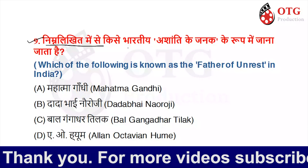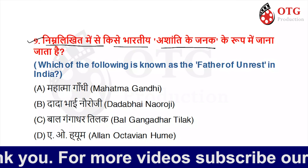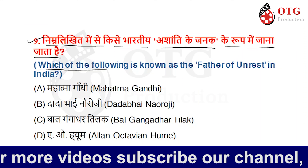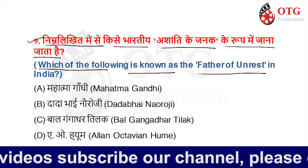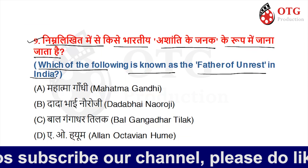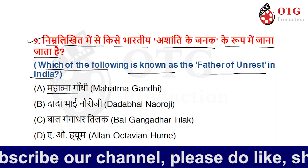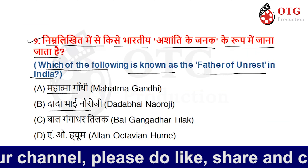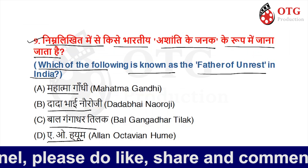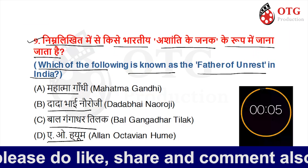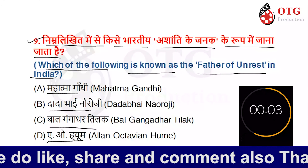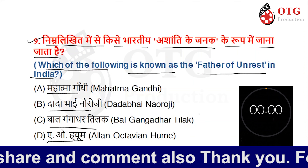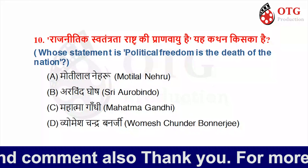Which of the following is known as the father of unrest in India? Option A is Mahatma Gandhi, Option B is Dadabhai Naoroji, Option C is Bal Gangadhar Tilak, and Option D is A.O. Hume. Your time starts now. The right option is Bal Gangadhar Tilak.